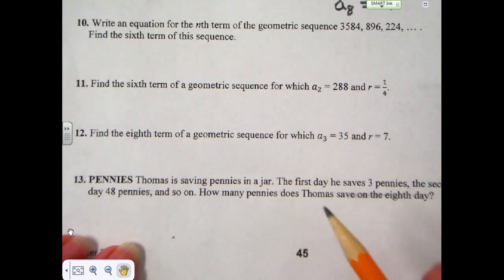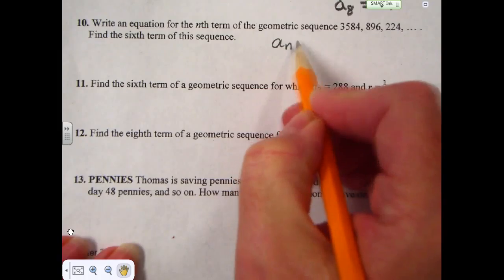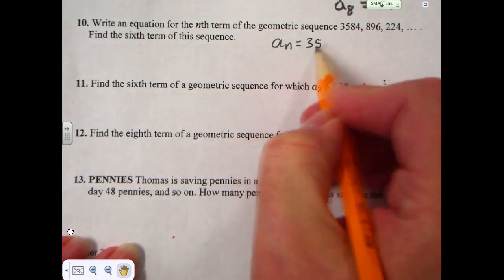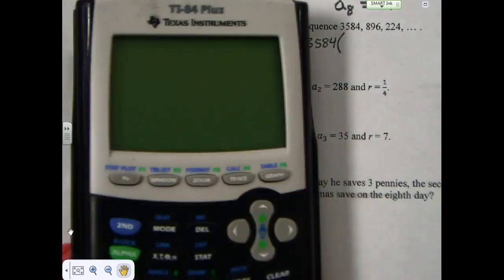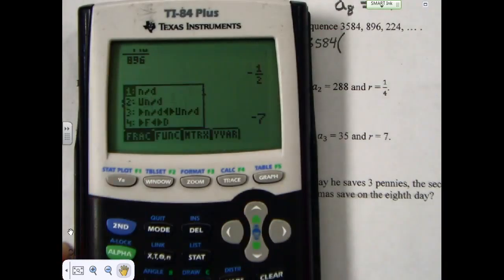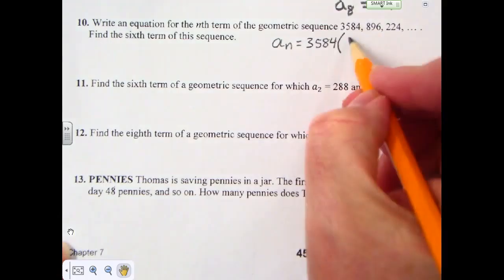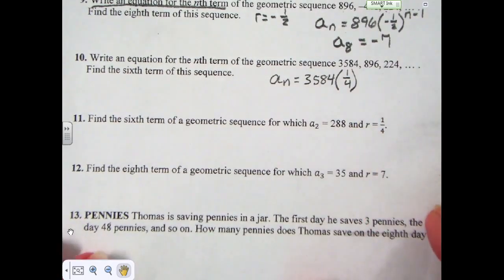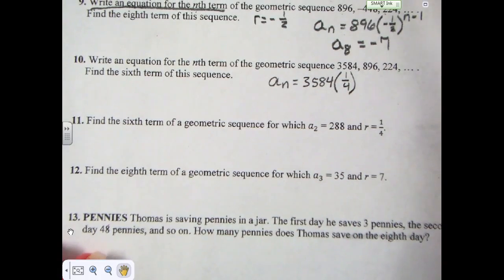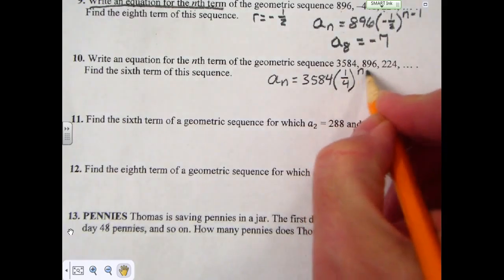Now, in this one, I'm going to find the equation, but I'm going to show you a different way to find the 6th term. The equation for the nth term is a sub n equals the first term, which is 3,584, times the ratio. Now, I need to stop and find that ratio. I will take my calculator and do the second term, which is 896, divided by the first term, which is 3,584, to find that my common ratio is 1 fourth. It just so happens that the last couple of problems have the common ratio being a fraction, but don't get too familiar with that, because the common ratio will not always be a fraction, and then we take that to the n minus 1 power.